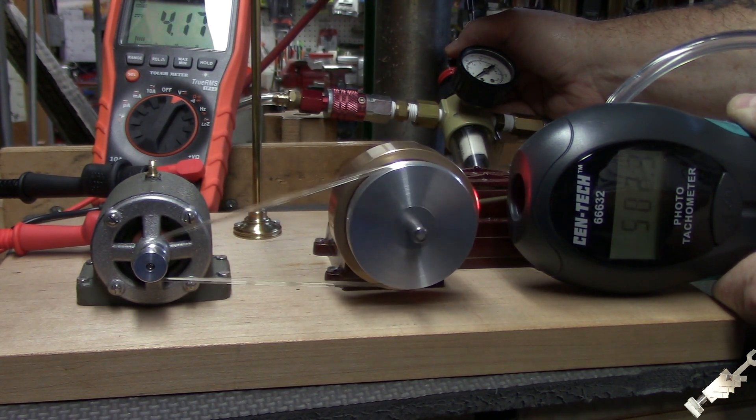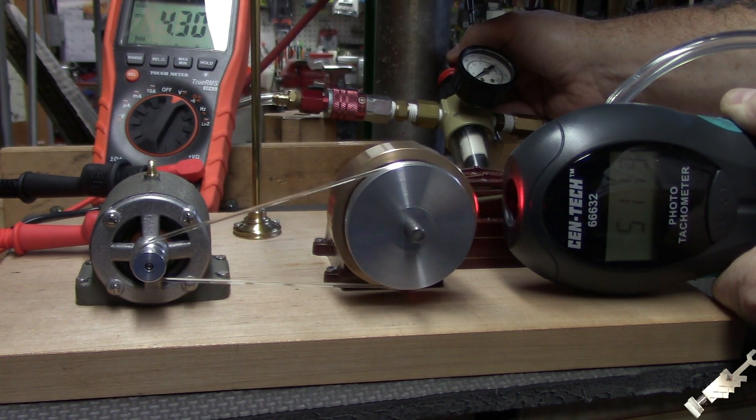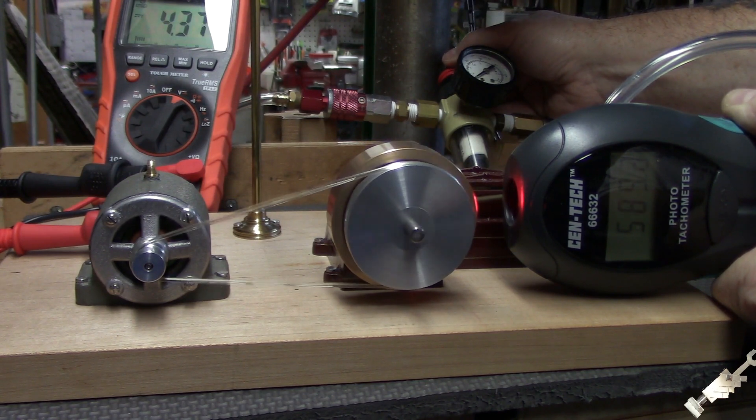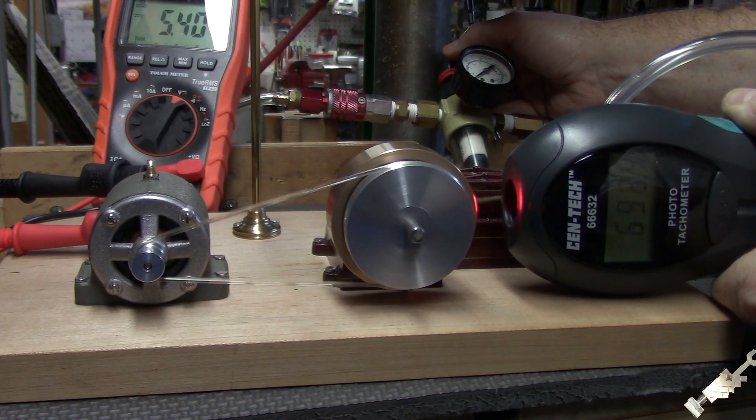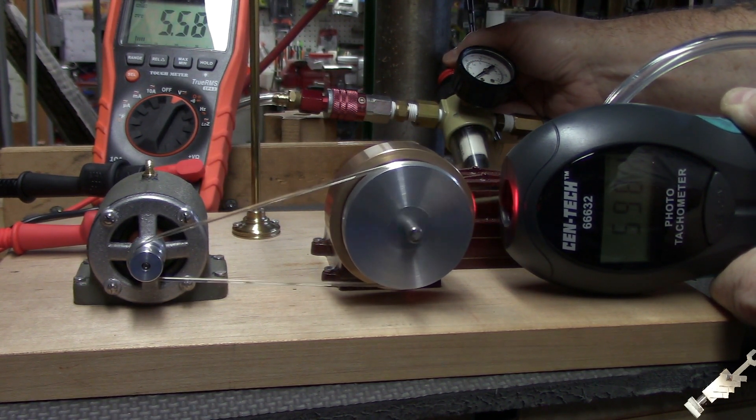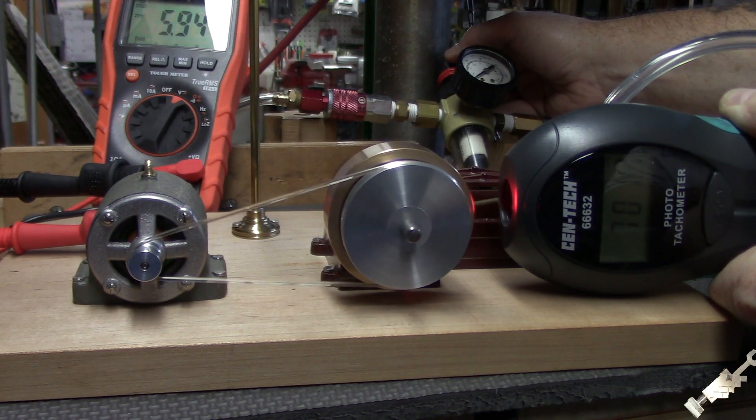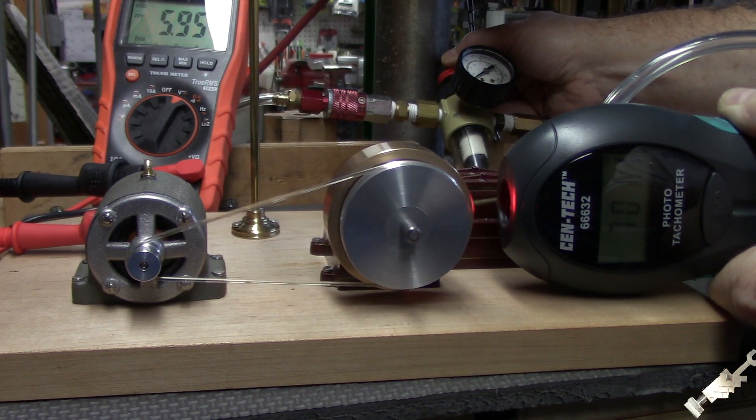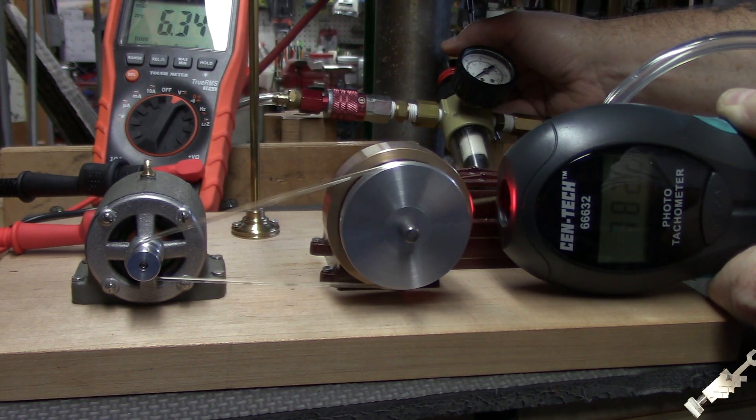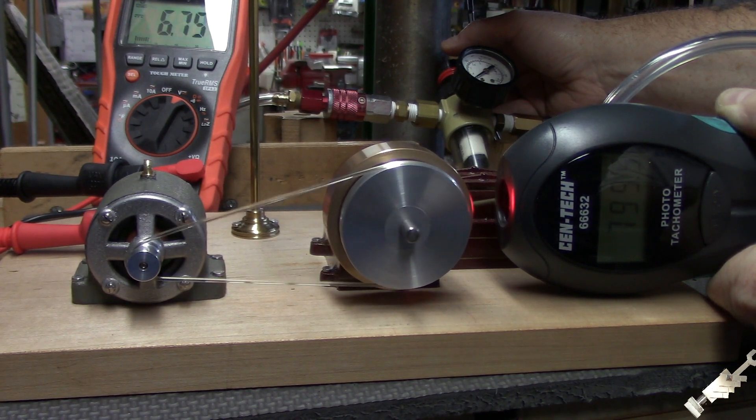It's about 500 RPM, just a little over 4 volts. About 650... About 700 RPM, it's just about 6 volts. 800 RPM, about 6 and 3 quarter.